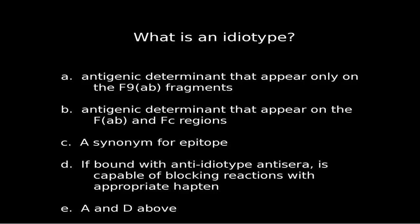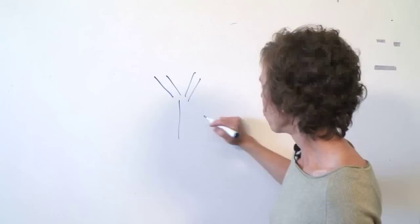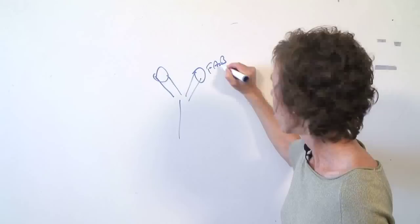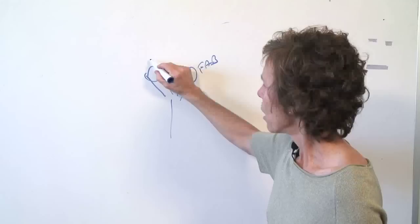Idiotype is a definition you might see on a test question. Answer A says it's an antigenic determinant that appears only on the Fab fragments. Remember we talk about isotypes — well, there are also idiotypes. The Fab portion of an antibody is the part that binds to the pathogen — I always remember 'Fab-nab' because this portion nabs the bad guy.